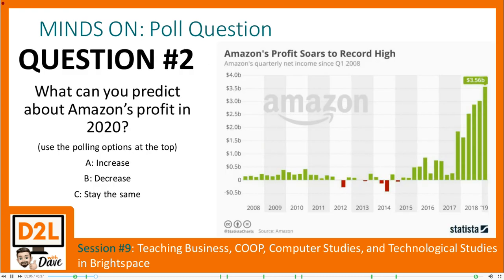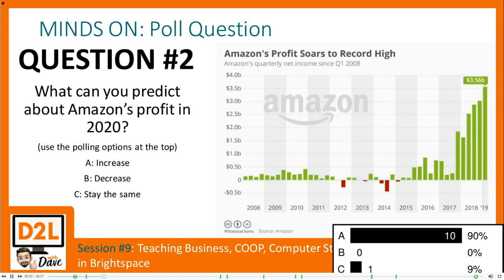Here's a question that could stem from a business course. Looking at this graph of Amazon profit soaring to record highs, what can you predict about Amazon's profit in 2020? We're initiating a poll — at the top of your screen you'll see A, B, or C. Choose whether you think their profits will increase, decrease, or stay the same. We've got 10 people who think it's going to increase and one who thinks it'll stay the same.